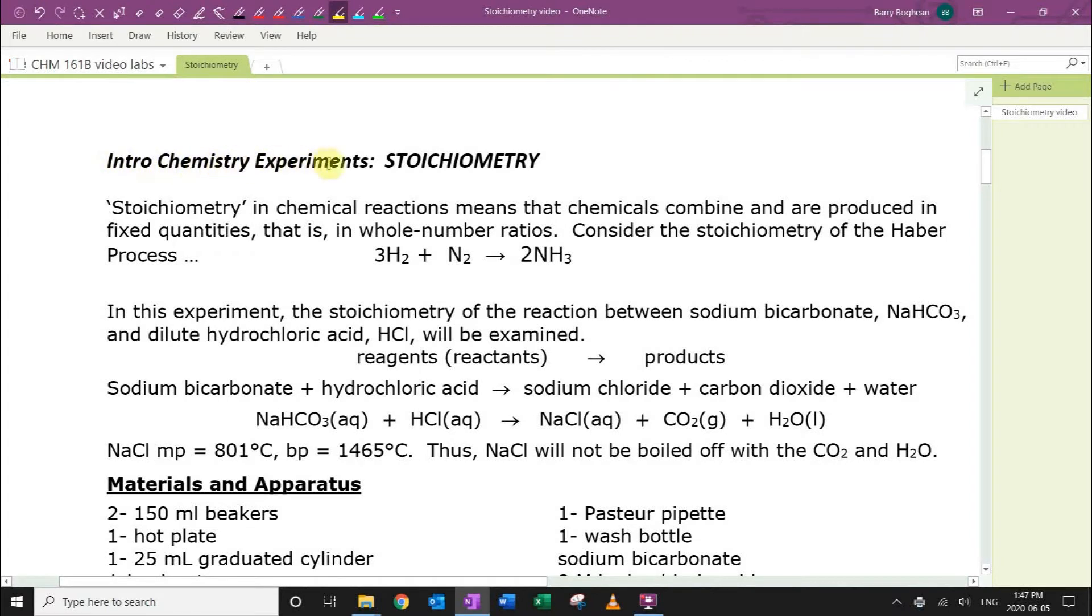Intro Chemistry Experiments: Stoichiometry. Stoichiometry in chemical reactions means that chemicals combine and are produced in fixed quantities, that is, in whole number ratios.